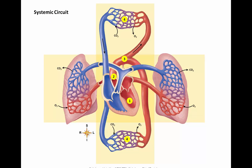Blood will make its way into small arterioles and through a capillary bed, which is the site of exchange. Oxygen will diffuse out of the blood into the cells, and carbon dioxide will diffuse out of the cells into the capillary. The flow of the now deoxygenated blood continues into venules, which merge into larger veins.